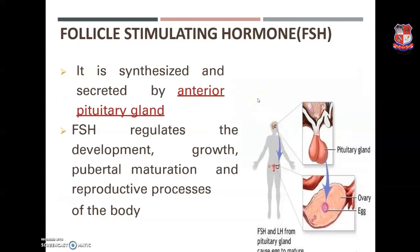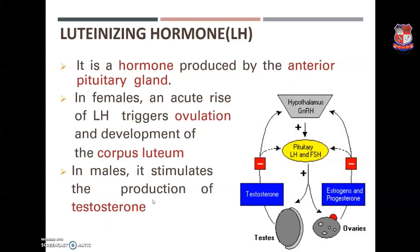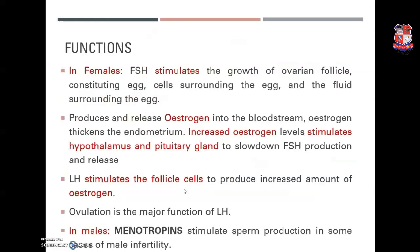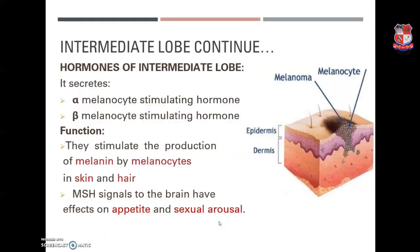Gonadotropic hormones consist of follicle stimulating hormone (FSH) and luteinizing hormone (LH), both synthesized and secreted by the anterior pituitary gland. FSH regulates development, growth, pubertal maturation, and reproductive processes. LH triggers further development of the ovulation process, stimulates follicle cells to produce increased estrogen, and ovulation is its major function. The intermediate lobe secretes melanocyte stimulating hormone (MSH), which stimulates melanin production by melanocytes in skin and hair, and passes signals to the brain affecting appetite and sexual arousal.